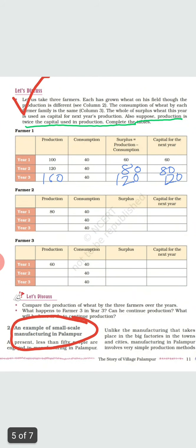Let's understand this more clearly with an activity. We compare three farmers and their production. Each has grown wheat on his field, though production is different. The consumption of wheat by each farmer's family is the same. The whole of surplus wheat this year is used as capital for next year's production. Also, production is twice the capital used in the production.